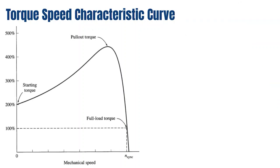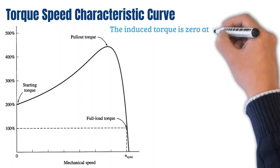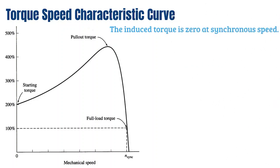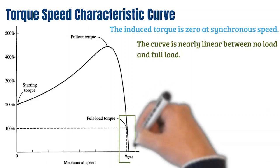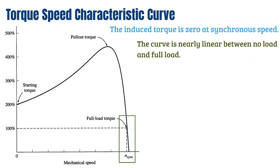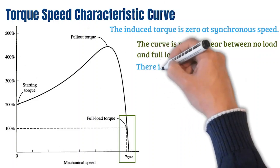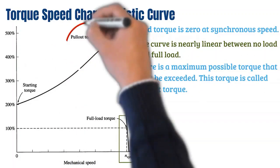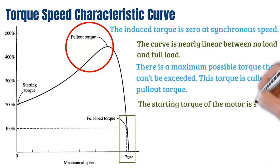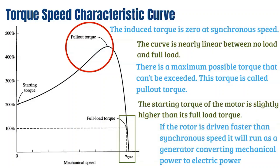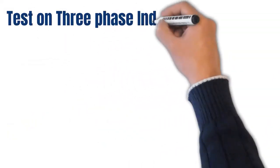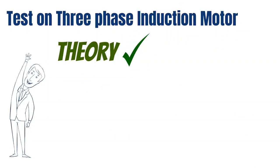Now let's observe the torque-speed characteristic curve. The induced torque is zero at synchronous speed since there is no relative rotational speed between the rotor and the rotating magnetic field. The curve is nearly linear between no-load and full load; in this range the rotor resistance is much greater than the reactance, so rotor current and torque increase linearly with slip. There is a maximum possible torque called the pullout torque. The starting torque is slightly higher than full-load torque. If the rotor is driven faster than synchronous speed, the machine runs as a generator, converting mechanical power to electrical power.